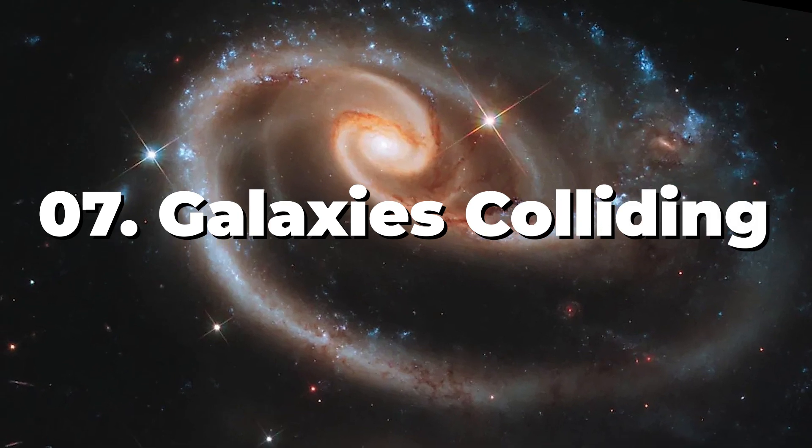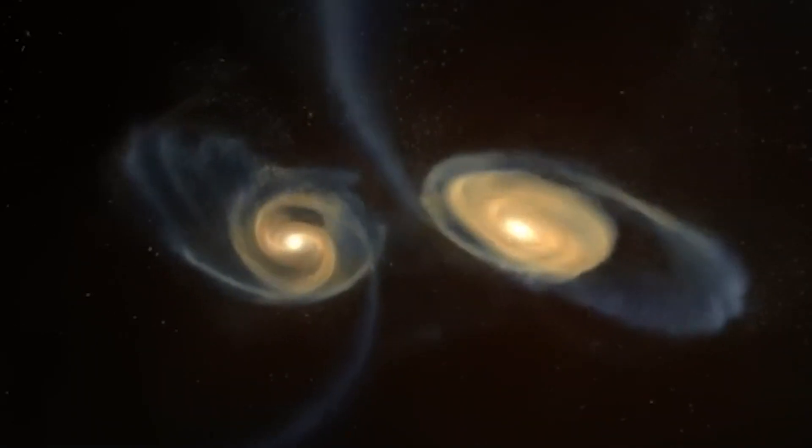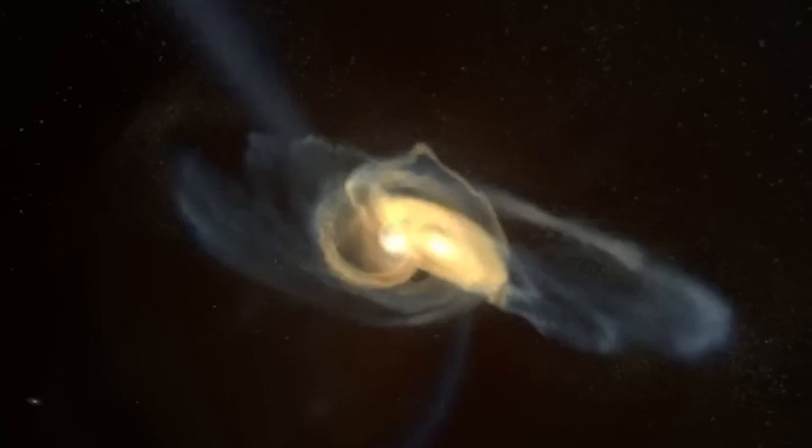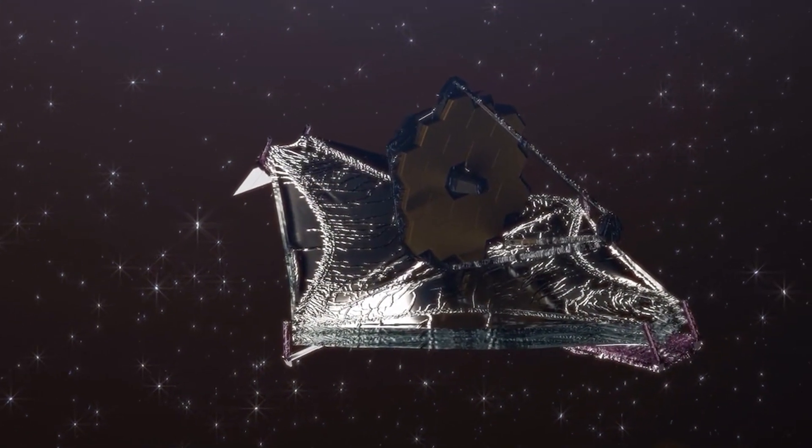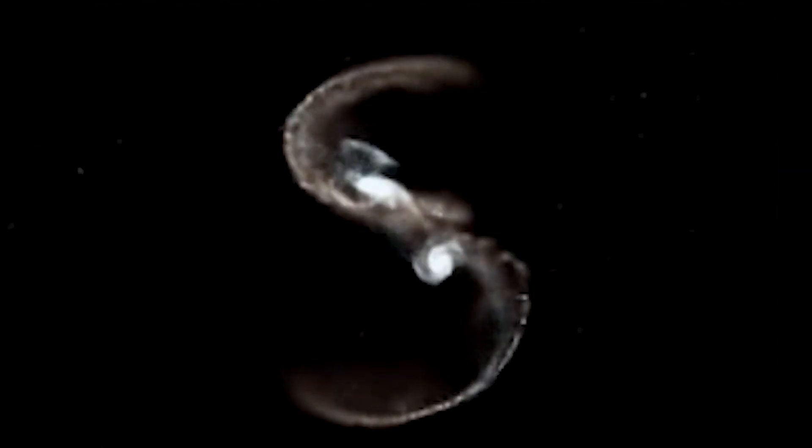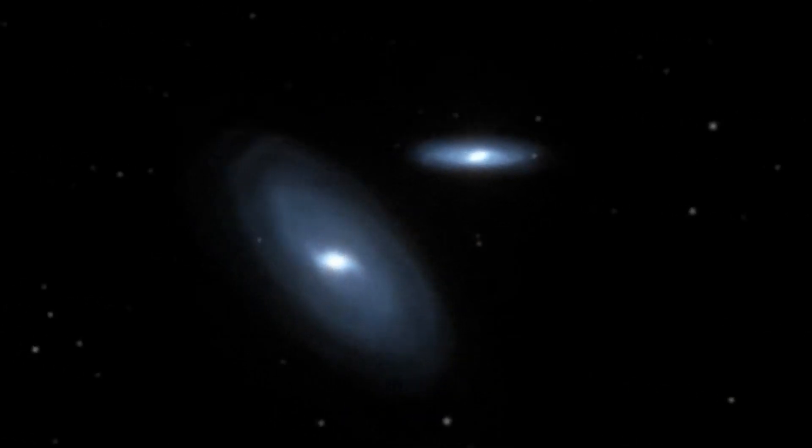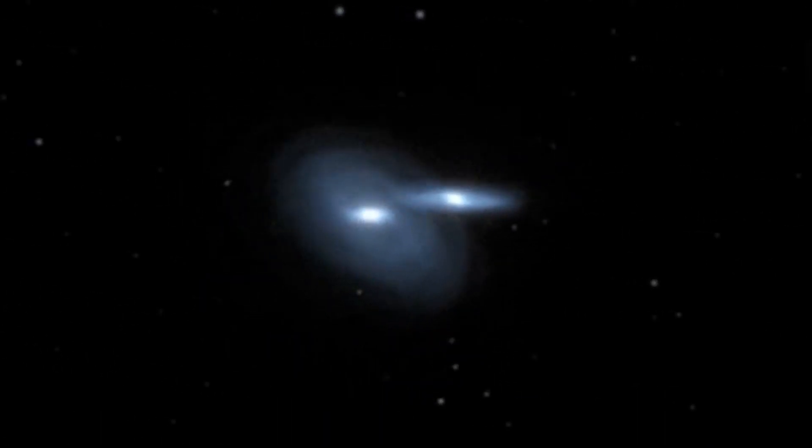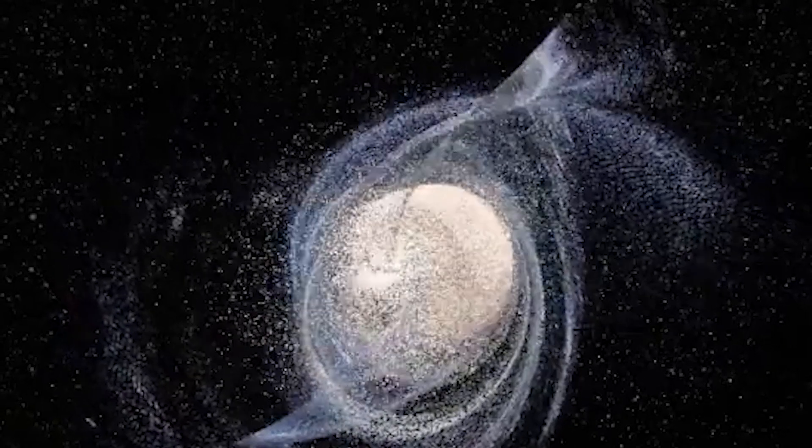Number 7. Galaxies Colliding. The exciting process of galaxies colliding has been photographed by the James Webb Space Telescope, exhibiting a cosmic dance of celestial ballet. Galaxy mergers are dynamic processes in which strong gravitational forces cause shape distortion and start star creation.